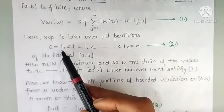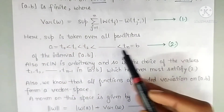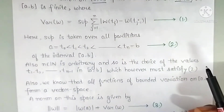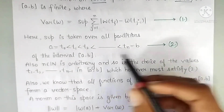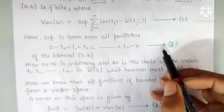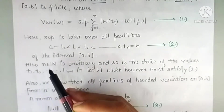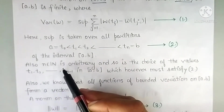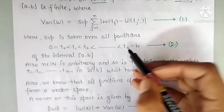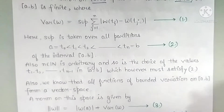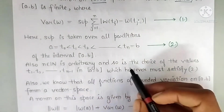A partition has T0 = a and Tn = b with additional elements in between. The n in the partition is arbitrary — we have not fixed any particular n.